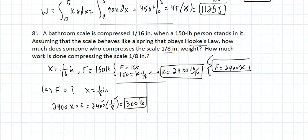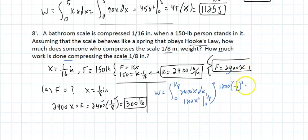Part b: How much work is done compressing the scale 1/8 inch? The integral from 0 to 1/8 of 2400x dx equals 1200x² evaluated from 0 to 1/8, which is 1200 times (1/8)² or 18.75 pound-inches. On a test you can leave it as 1200(1/8)².